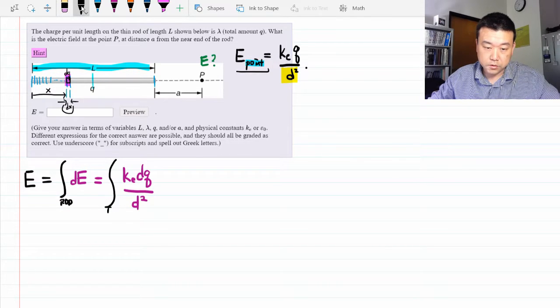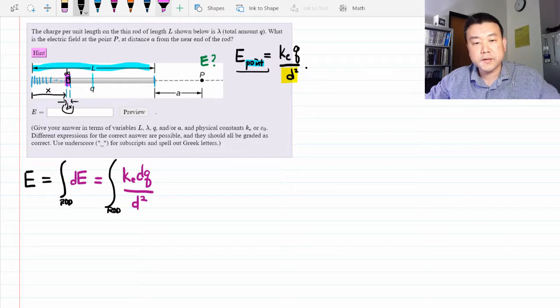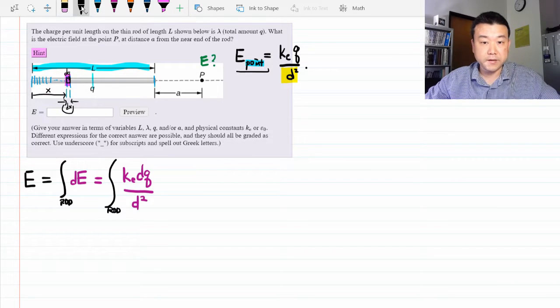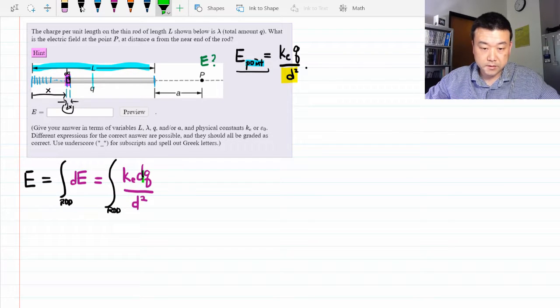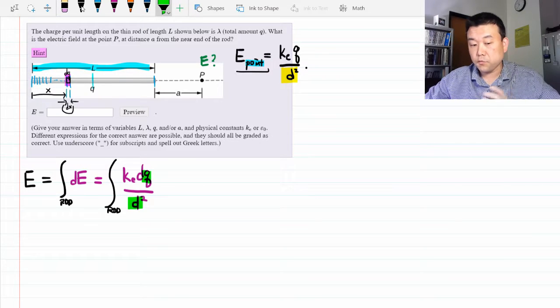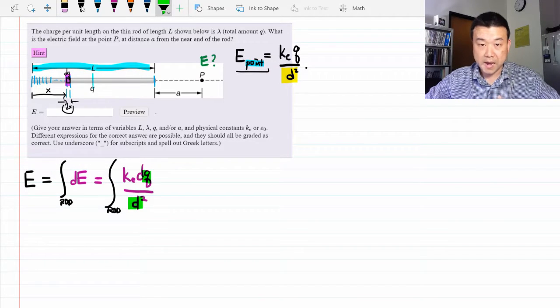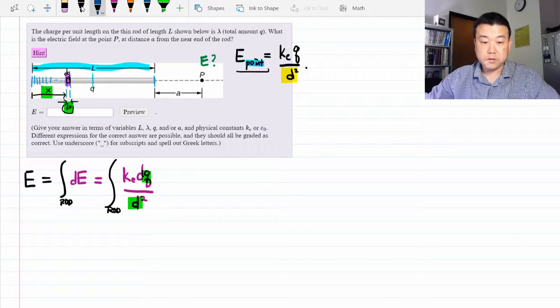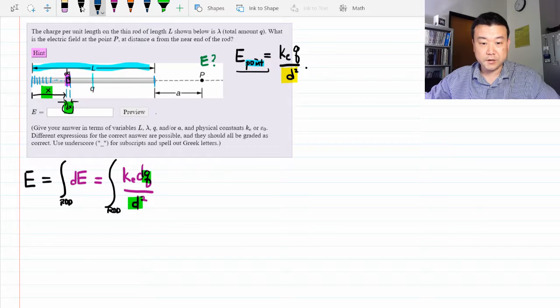The net electric field at point P is given by the integral of the infinitesimal contributions over the entire rod. And when you look at this expression here, we have a couple quantities that are only a schematic representation. That's the dq and this distance. And we should rewrite these schematic representations in terms of these parameters that we picked.